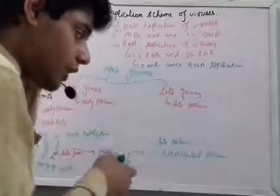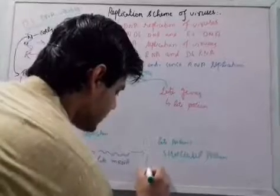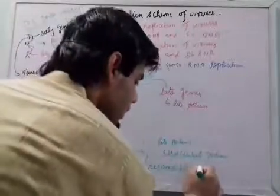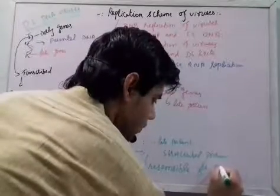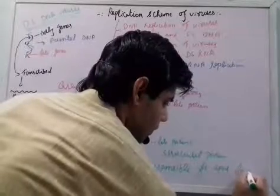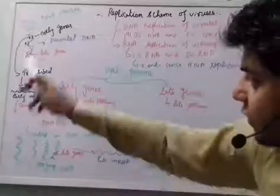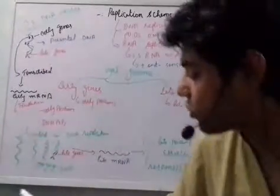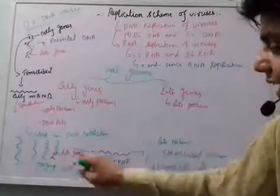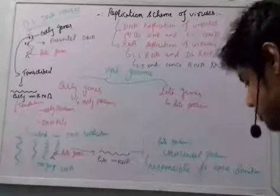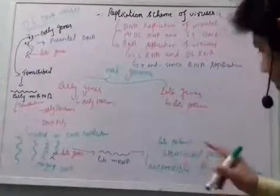The late proteins are called structural proteins because these structural proteins are responsible for capsid formation. So from the progeny DNA — double-stranded or single-stranded — we get late genes, then late messenger RNA, then late proteins, and these late proteins are responsible for capsid formation. Once the whole replication process is done, including transcription of both early and late genes, we get the final progeny DNA.